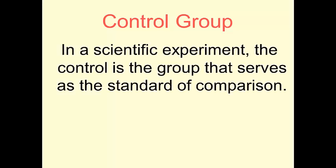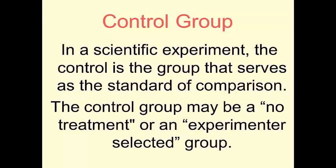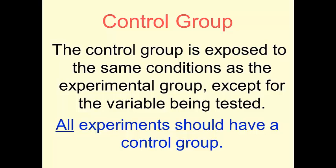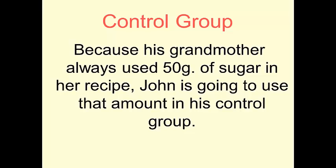In a scientific experiment, the control is the group that serves as the standard of comparison, the one that he knows usually works. That's the control group. The control group may be a no-treatment or an experimenter-selected group. The control group is exposed to the same conditions as the experimental group except for the variable being tested. So, everything else needs to be controlled and needs to stay the same except for the amount of sugar that he's adding. All experiments should have a control group. Because his grandmother always used 50 grams of sugar in her recipe, John is going to use that amount in his control group.